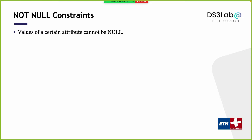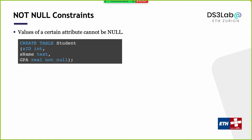Let's look at the simplest case. One type of constraint you can enforce is to say: all the values you put into this attribute cannot be null — they need to be concrete values. For example, I have a student relation with student ID (integer), student name (string), and GPA (real number). The constraint is I cannot have a student without a GPA. If you give me a database where for some student you don't know the GPA, that's not a valid database instance. You enforce this with the NOT NULL keyword when defining the schema.